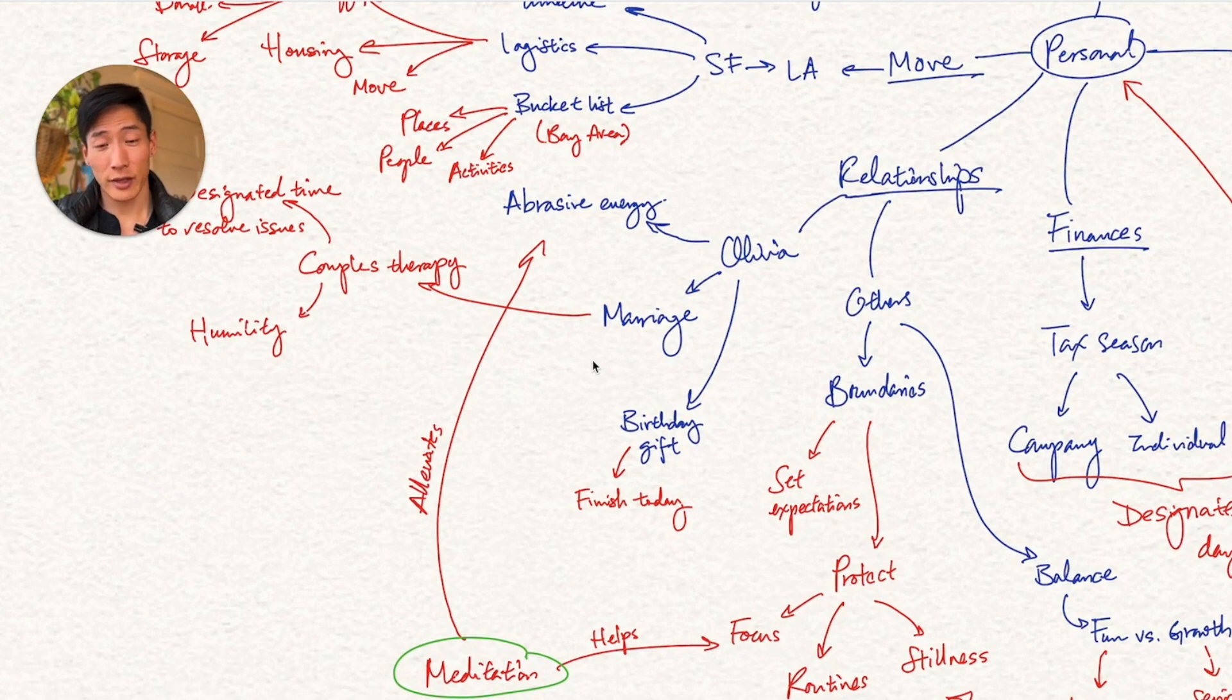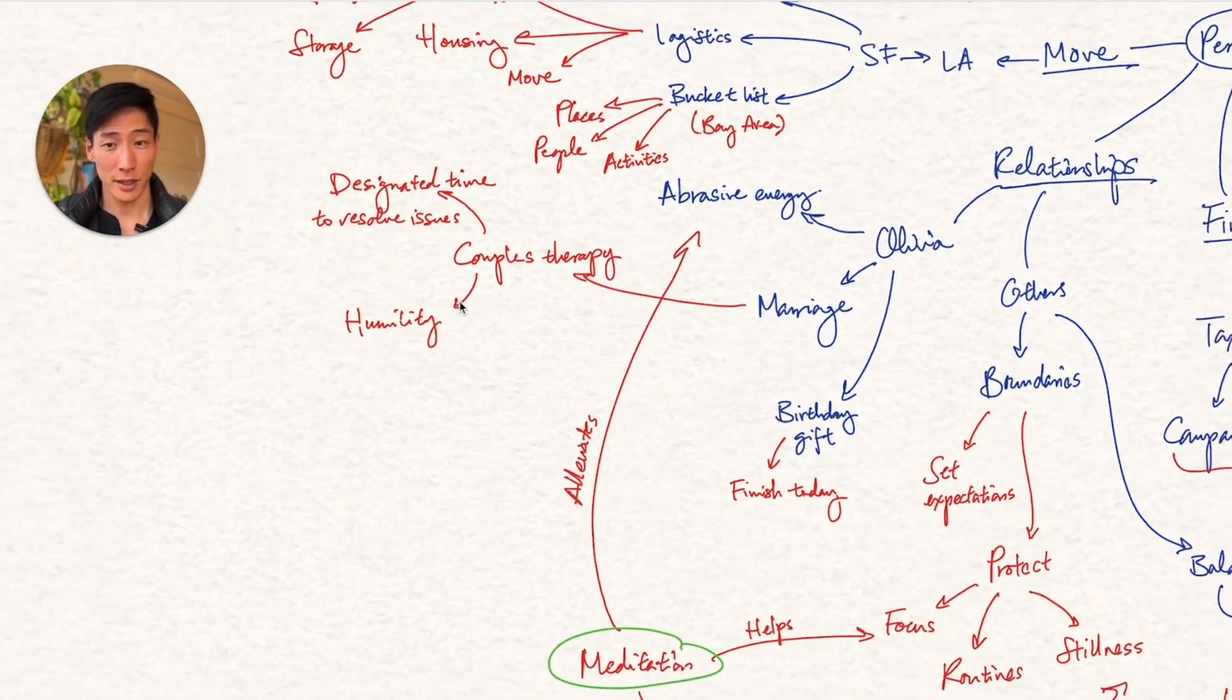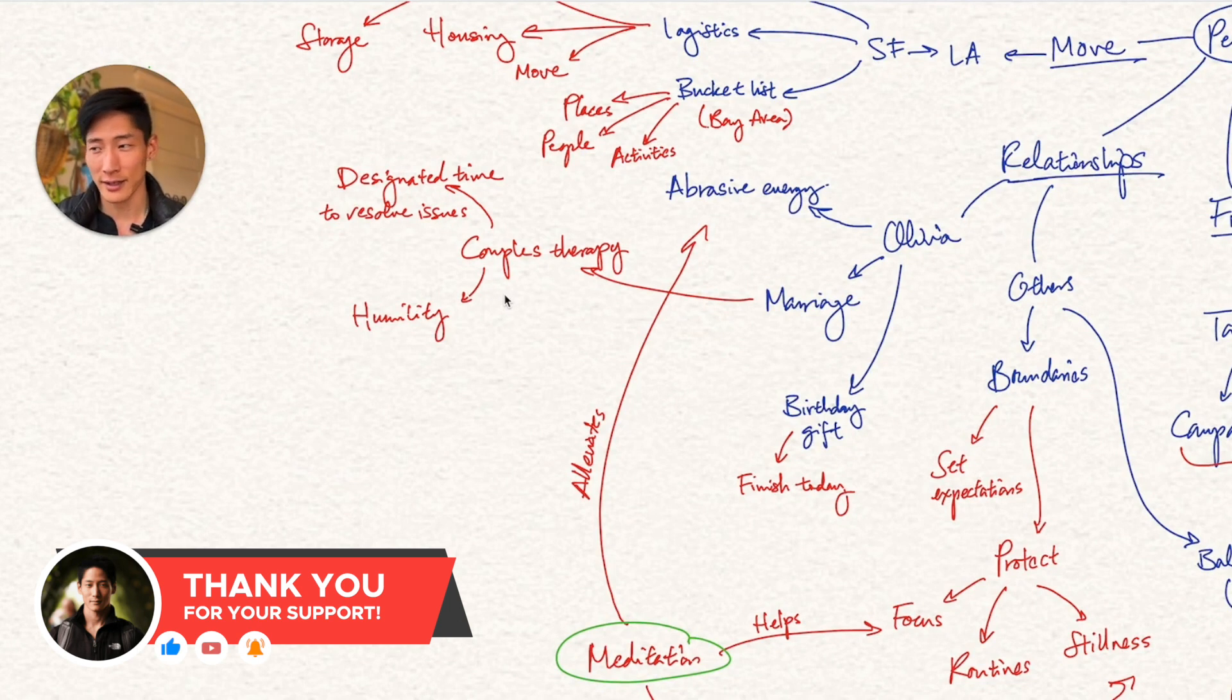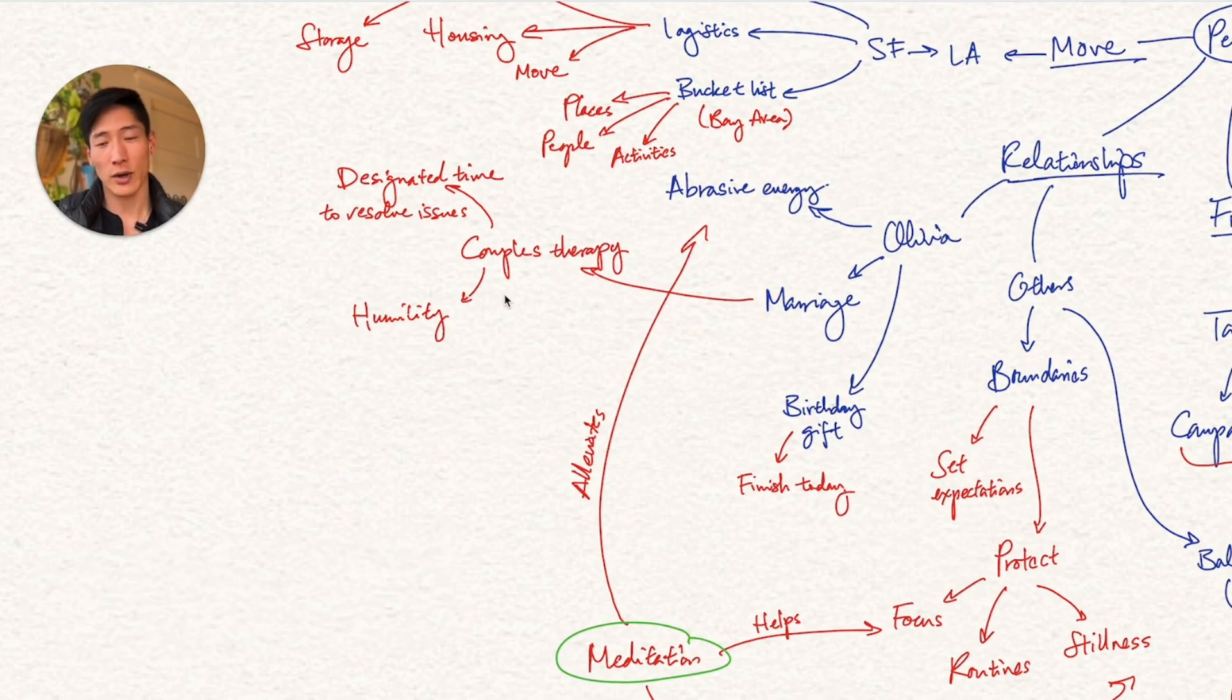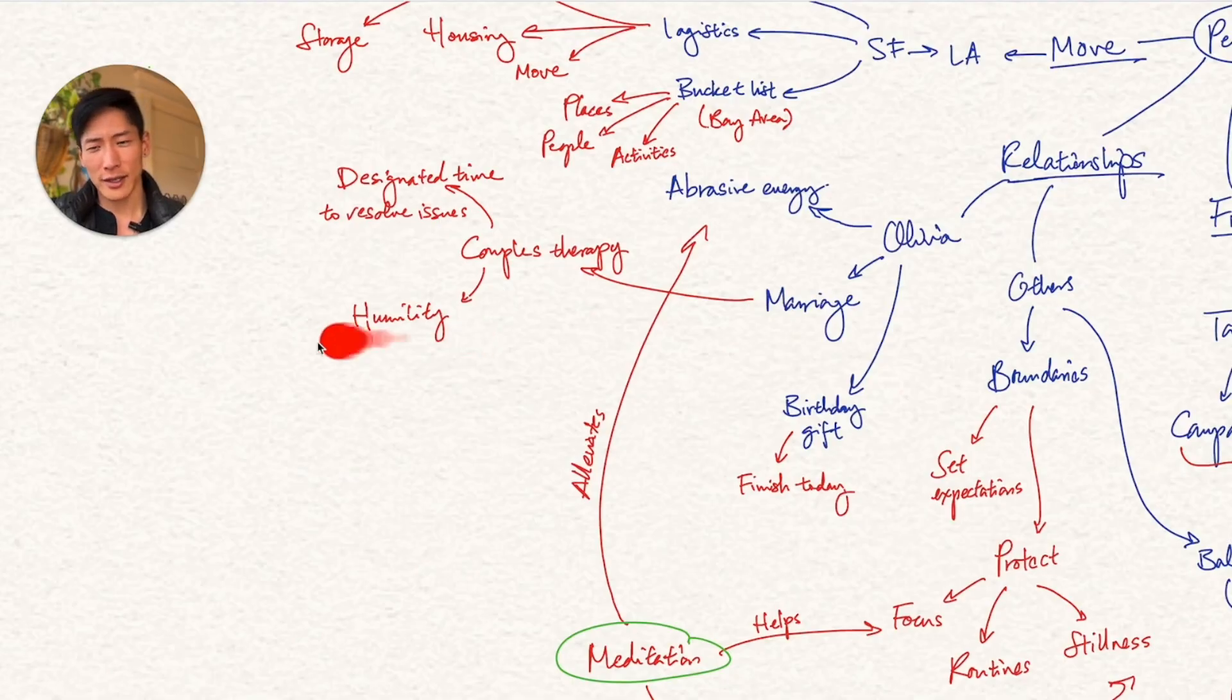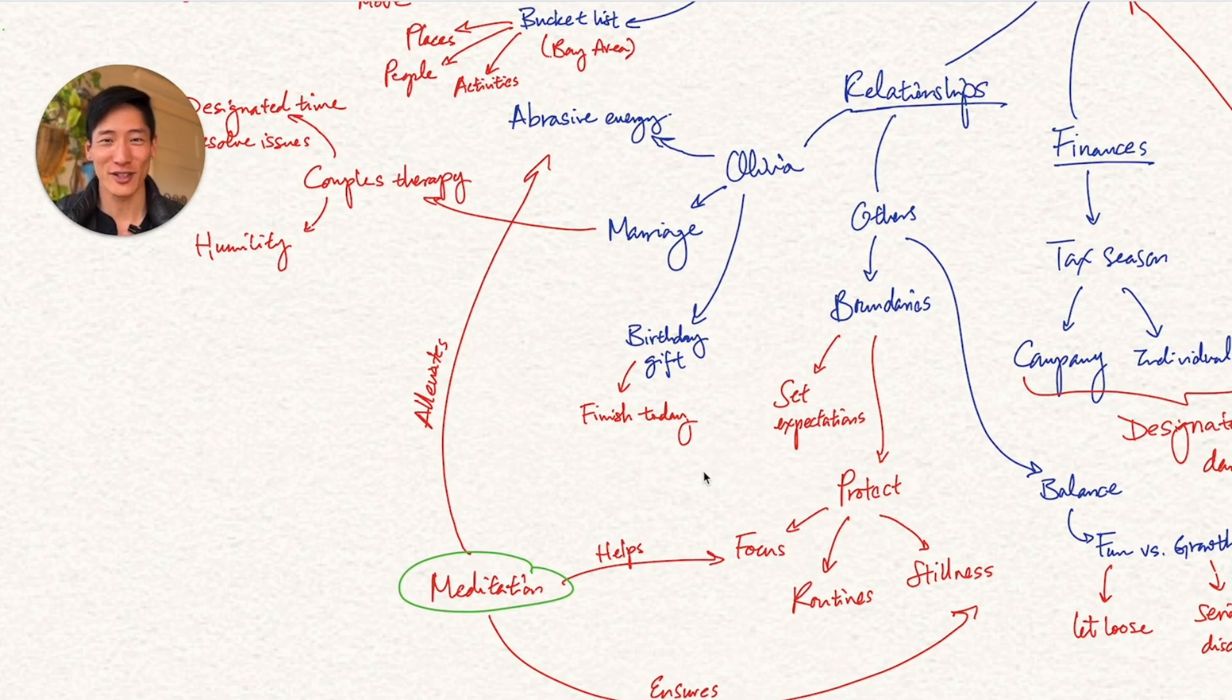Then under relationships, specifically my marriage with Olivia. This is signing up for couples therapy that we're going to be starting later next week. This allows us to have designated time to resolve issues. So it's not just a case-by-case stop-and-go basis. That means we're actually able to live our lives generally and then have a single time with a third party to actually work those things out with a professional. And along with that is actually a sense of humility. It's actually recognizing that we're going through a rough patch. And that's usually the first step to actually amending a relationship. And then, of course, the birthday gift I want to finish today. I'm going to carve out some time after I finish this recording.